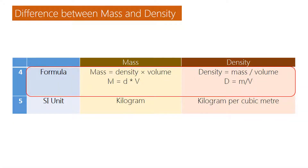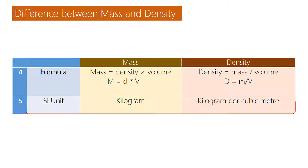Formula of mass: mass is equal to density multiplied by volume — M = D × V. Formula of density: density is equal to mass divided by volume — D = M/V. SI unit of mass: kilogram.